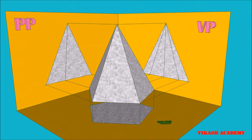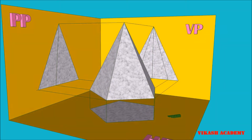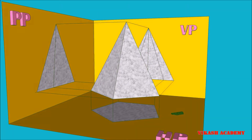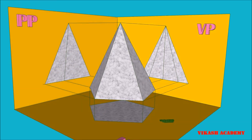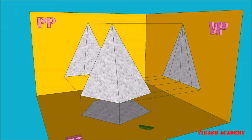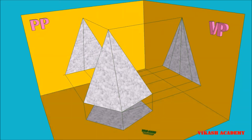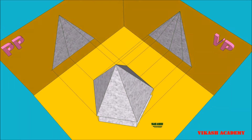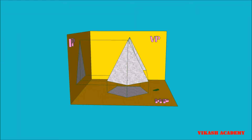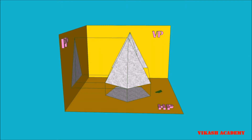As you can see, this pentagonal pyramid is situated such that one of its sides is parallel to the vertical plane, and the pentagonal base of this pentagonal pyramid is situated on the horizontal plane — above the horizontal plane by some distance and apart from the vertical plane by some distance.